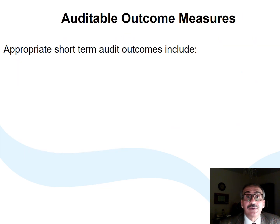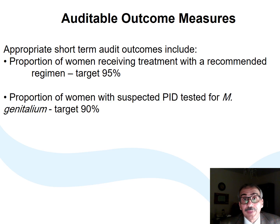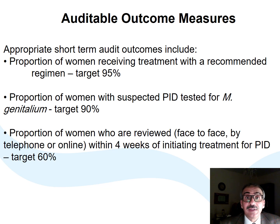Some ideas for your unit audits: 90% of patients should receive treatment as per unit protocol; 90% of patients should be tested for Mycoplasma genitalium; and 60% of patients should be followed up within four weeks.